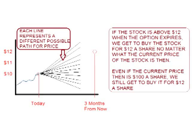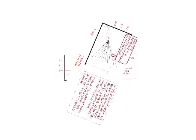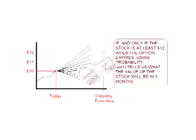This brings us to the second unknown. The second unknown we have to answer is: if and only if the option is exercised, what will the future value or price of the stock be? We get to buy it for $12, even if the stock is worth more than $12. ND1 tells us the probability or odds of what the value of the stock will be.